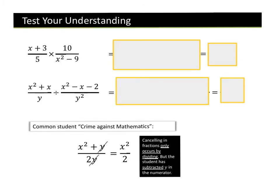Here are two more examples of multiplying and dividing algebraic fractions. For the first, factorise any expression in the numerator and/or denominator, then cancel out. For the second, factorise your expression, then change the sign to multiplication and find the reciprocal of the second fraction. Pause the video and see if you get the right answer.